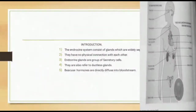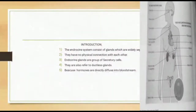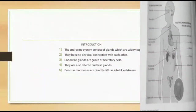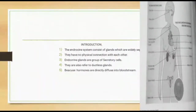Here is a diagram of glands. There is the pineal gland, the pituitary gland, thyroid gland, adrenal gland, and pancreatic islets gland. These are the main endocrine glands.